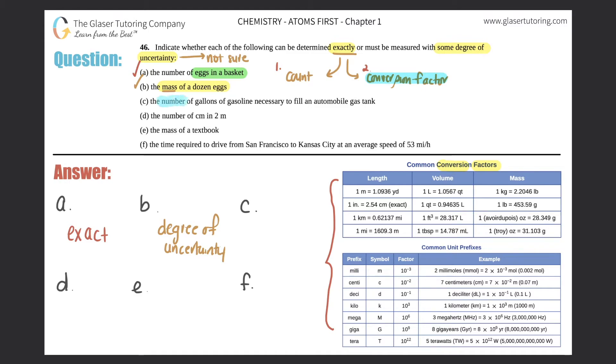C, the number of gallons of gasoline needed to fill an automobile gas tank. Do I know how much gasoline my car needs? Absolutely not. I should know that, I guess. But do I know exactly? No, I don't know the exact number, but can I guesstimate what it is? Probably. It's not coming from a conversion factor and I can't count it. So it has to be a degree of uncertainty.